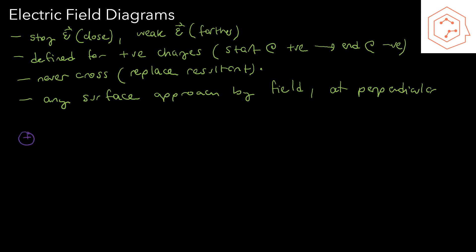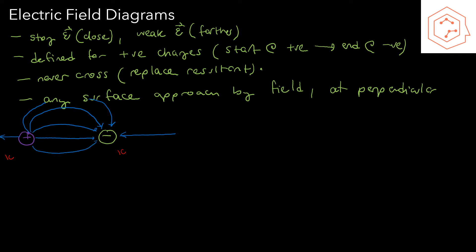In our first example we have a positive charge and a negative charge, both of one coulomb. The field lines are going to start at the positive charge and go to the negative charge. As we get farther away from this system the field becomes weaker, so we space out the lines. The field lines go towards the negative charge and away from the positive charge, and it will be symmetric since both charges are one coulomb.